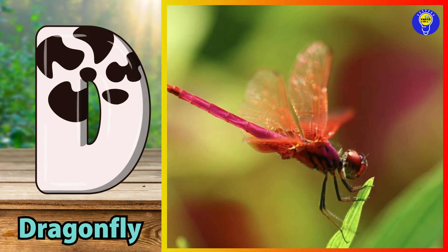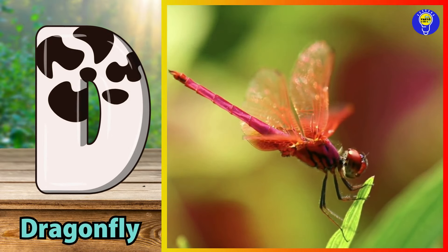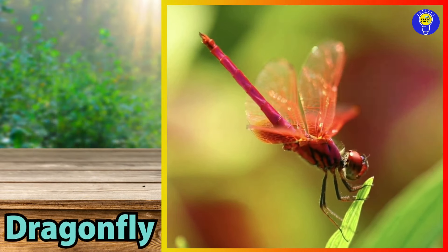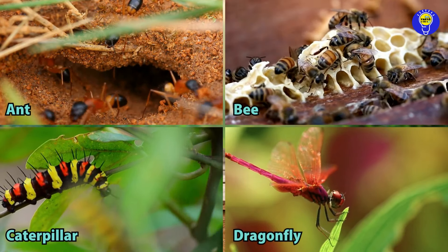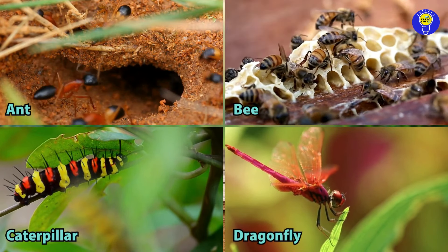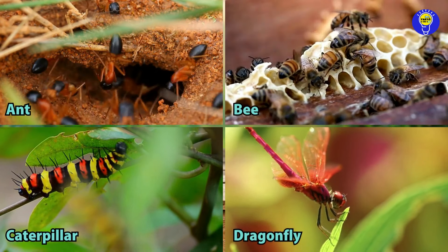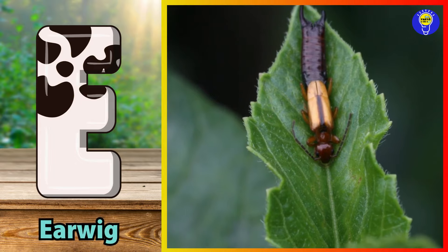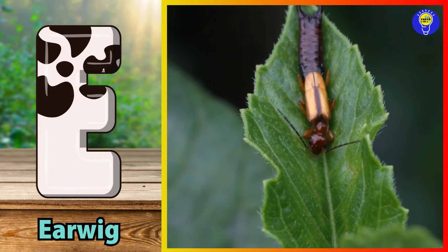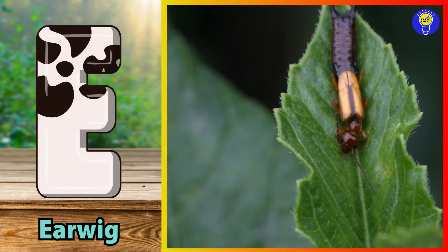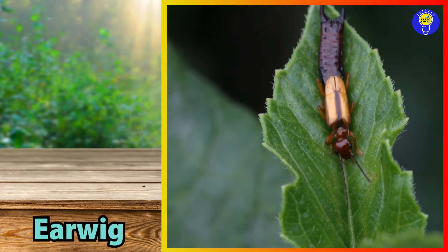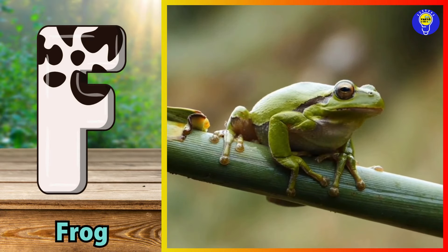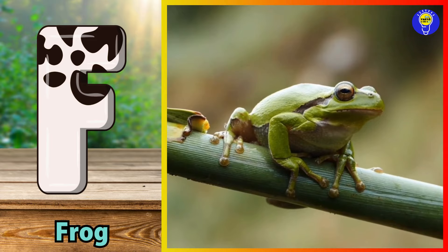D is for dragonfly. D, d, dragonfly. E is for earwig. E, e, earwig. F is for frog. F, f, frog.